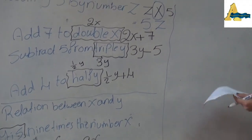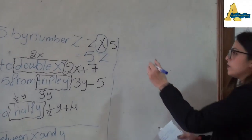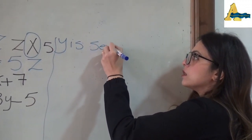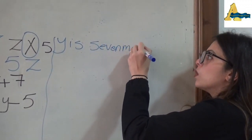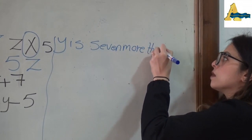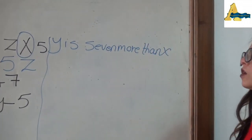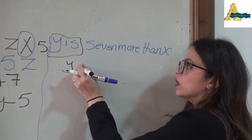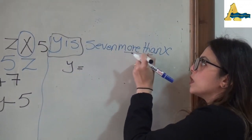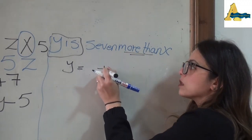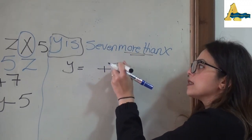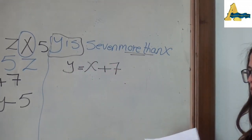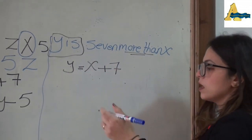Another example: if he said 'y is 7 more than x'. Y is means y equals. The word 'more than' means plus, that means plus 7. So y equals x plus 7, written as y = x + 7.